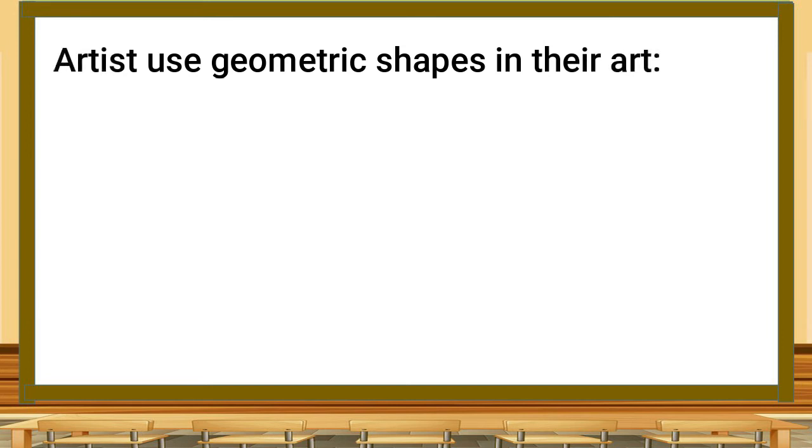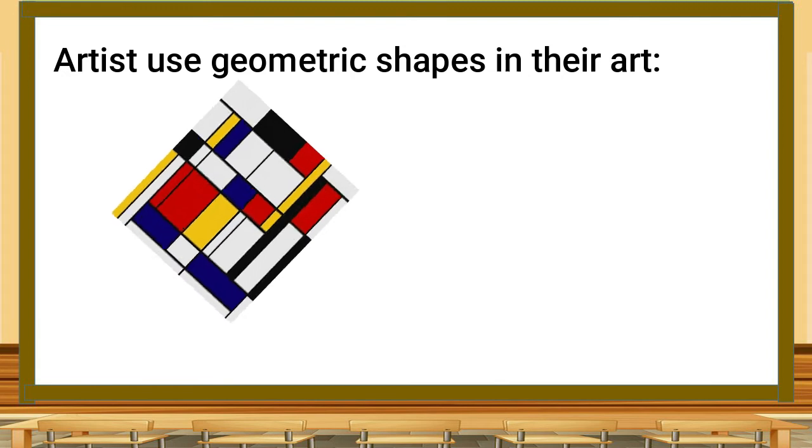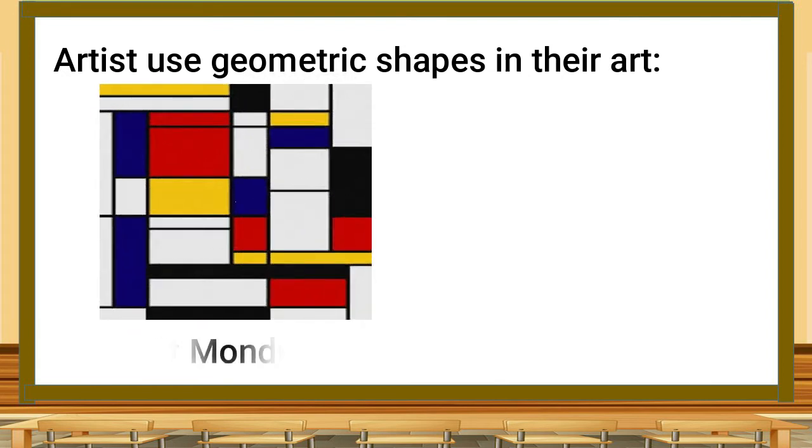Artists use geometric shapes in their art all the time. See if you can find the geometric shapes in this painting by an artist named Piet Mondrian. Let's take a second to pause the video and look at the geometric shapes here. As a bonus question, what color family do you see in this painting?